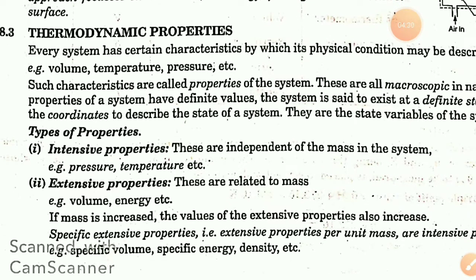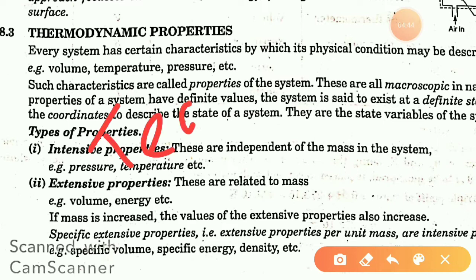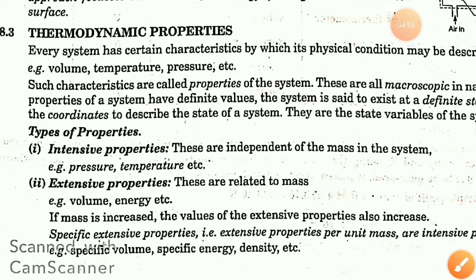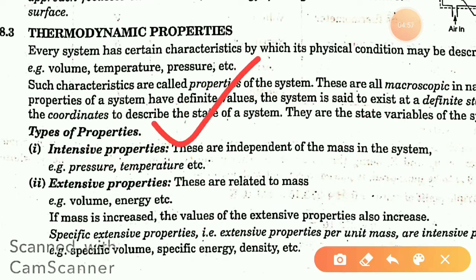A thermodynamic property is every observable characteristic of a system. Examples include temperature, pressure, and volume. There are two types: extensive property and intensive property.